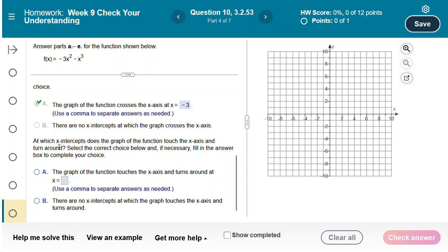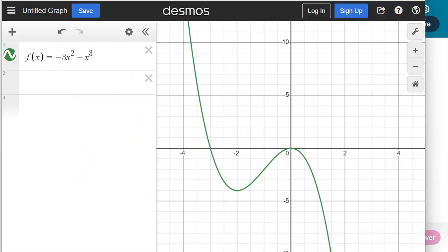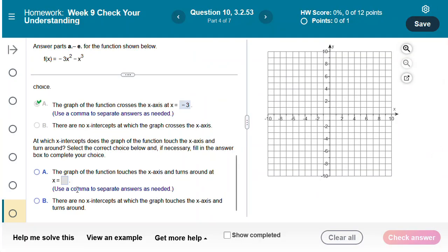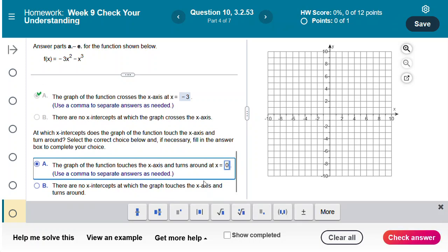The next question is at which x-intercepts does the graph of the function touch the x-axis and turn around? I can see that it does that at 0. I'm going to choose answer choice A and enter 0 into the box. If there were multiple places I would separate them with a comma.